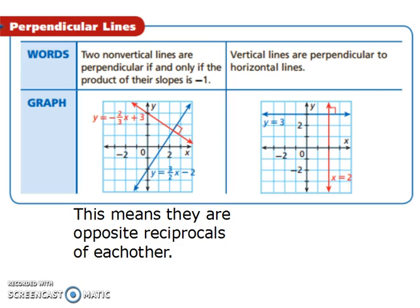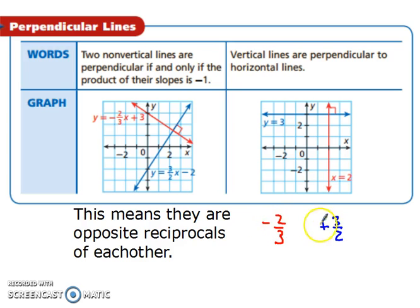Let's look at perpendicular lines. Two non-vertical lines are perpendicular if and only if the product of their slopes is −1. It might be easier to think of it this way: their slopes are opposite reciprocals of each other. For example, a slope of −2/3 and a slope of 3/2 are opposite reciprocals — one is negative, the other positive, and they're flipped.